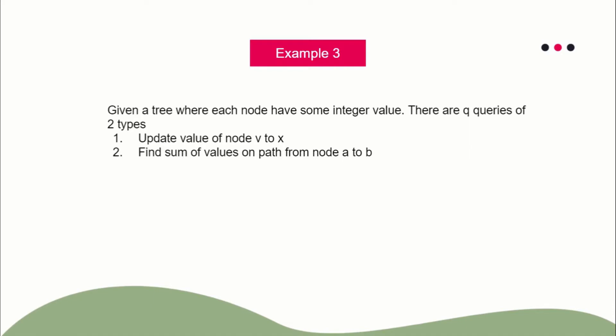The third type of problem is a path query. The first query type is the same update, and the second query requires you to find the sum of values on the path from node A to node B. Again, we use tree flattening (ETT), and since we need the sum of the path from A to B, you can apply either a segment tree or Fenwick tree.